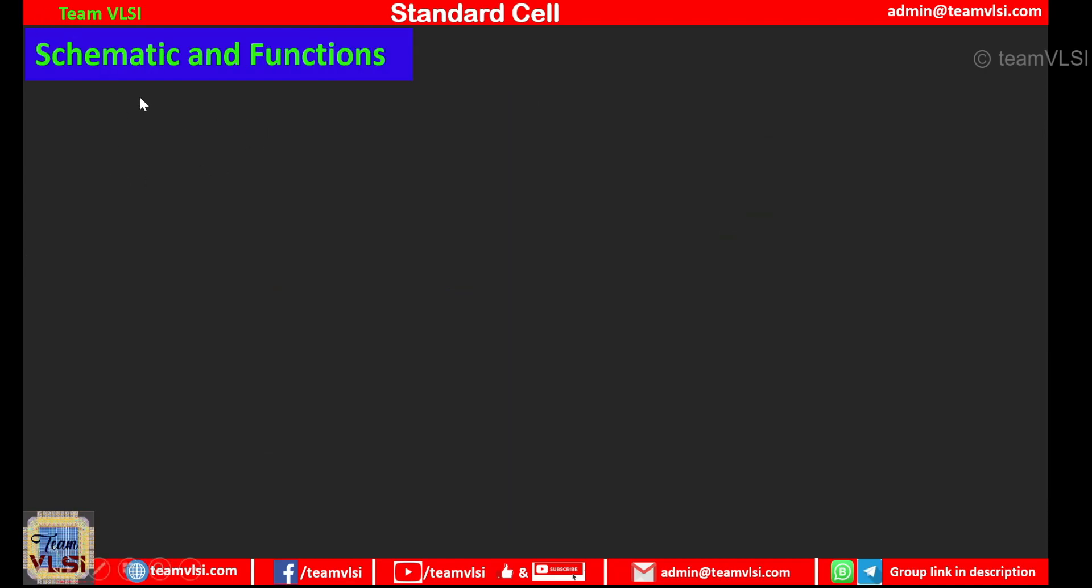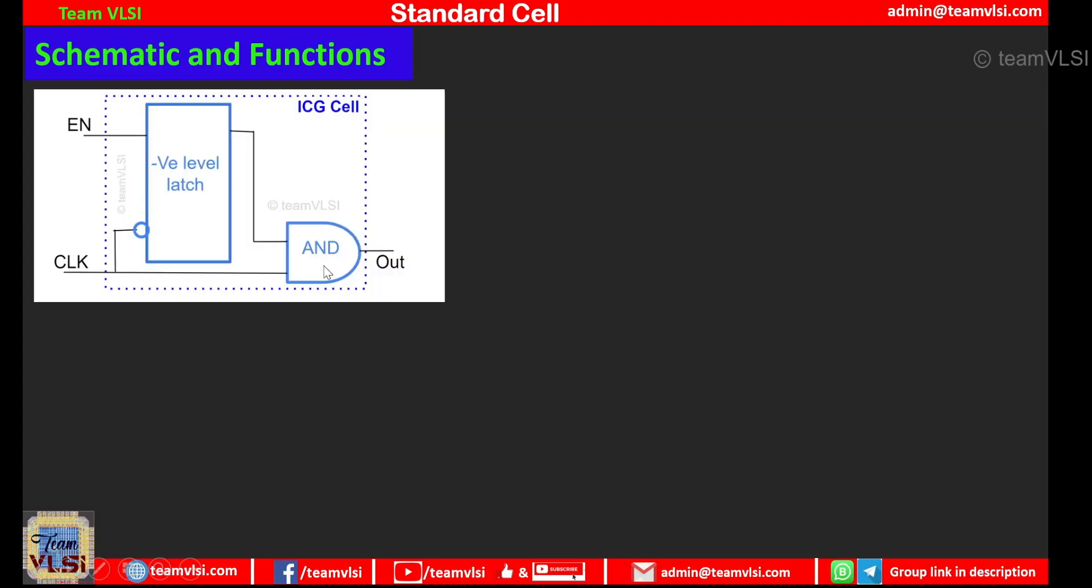So here I am showing you most popular schematic of an ICG cell that is made of using a negative level sensitive latch and an AND gate. Connected like this. So enable pin of this negative level sensitive latch is connected to clock and same clock is going to the AND gate and the control signal which is called here clock enable signal is connected to this EN pin which controls this ICG cell either it has to stop the clock or it has to pass the clock.